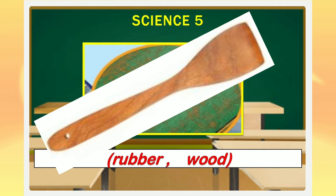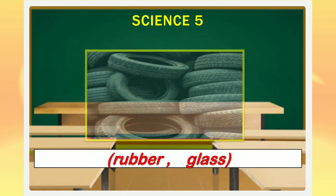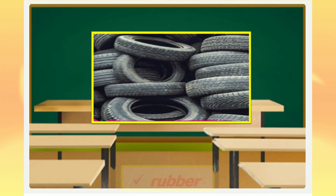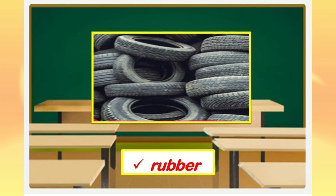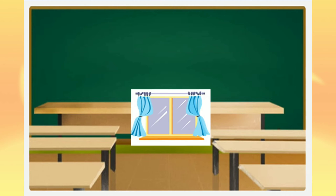These bottles are made up of glass. How about this spatula? Is it made up of rubber or made up of wood? The correct answer is wood — spatula is made up of wood. How about these tires? Are they made up of rubber or glass? Correct — tires are made up of rubber. Glass, wood, metal, rubber, plastic, and fabric are some physical properties of materials.